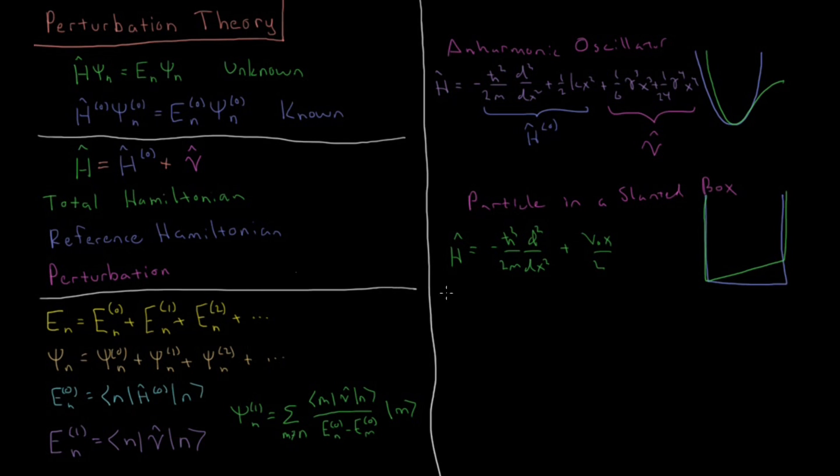And this we would just break into the particle in a box Hamiltonian, which is just the kinetic energy part, which is our H0 there. And our perturbation is the slanting part of the potential energy, which is our V there.